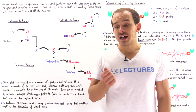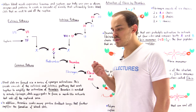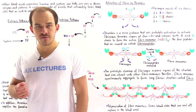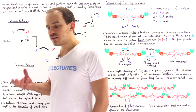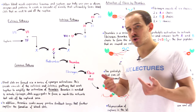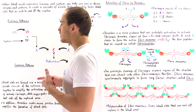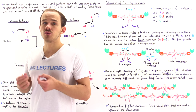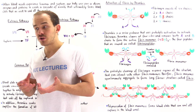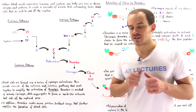Digestive enzymes are not the only enzymes inside our body that must be activated via the process of proteolytic cleavage. Another set of enzymes found inside our body that are also activated via proteolytic cleavage are the enzymes involved in creating blood clots. The process by which we create blood clots is known as the blood clotting cascade.